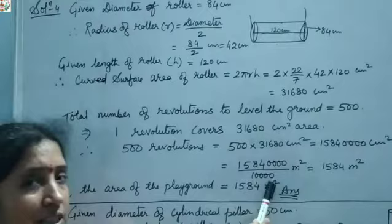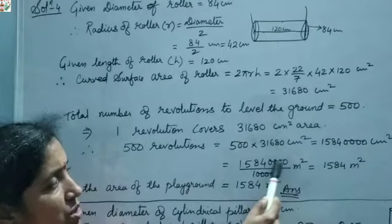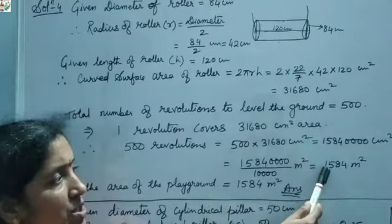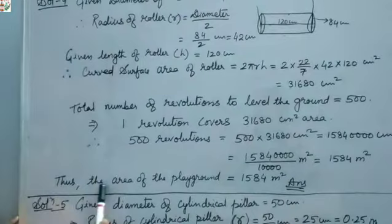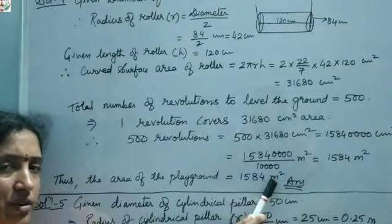Dividing by 10,000, the four zeros in numerator and denominator cancel, giving 1584 m². Therefore the area of the playground is 1584 m². The 4th question is clear. Now let's see the 5th question.